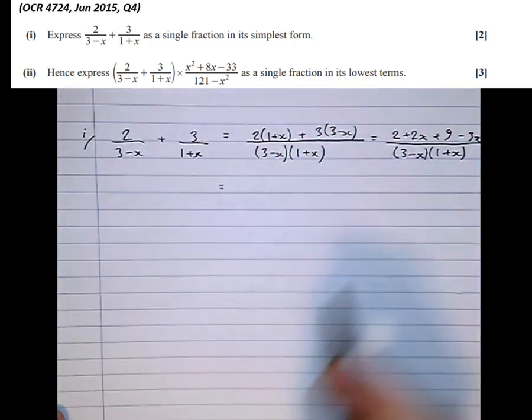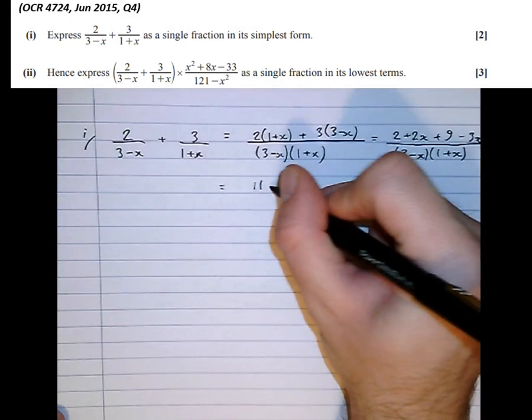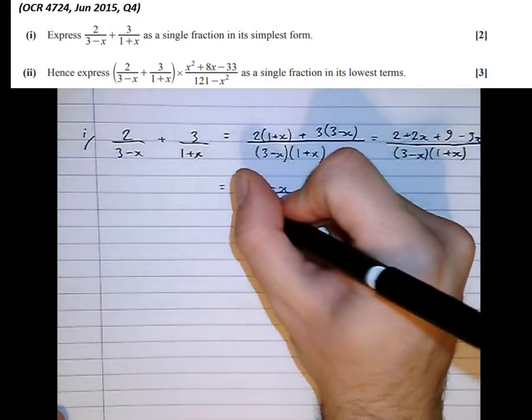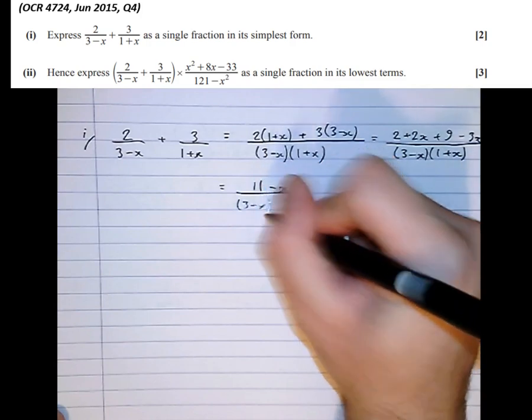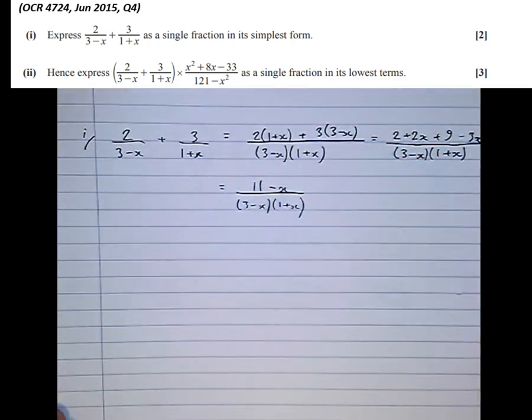Then finally, simplifying. 2 plus 9 is 11. Combine the x's to make minus x over 3 minus x, 1 plus x. And that's the answer.